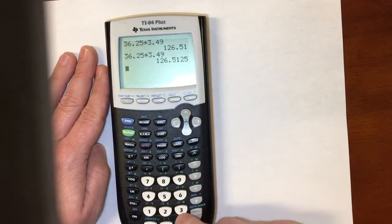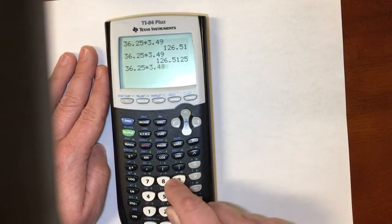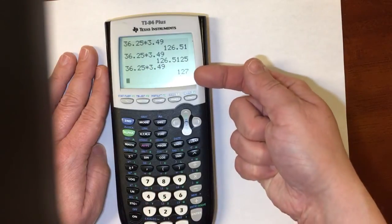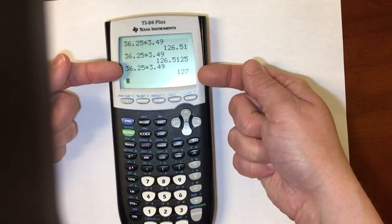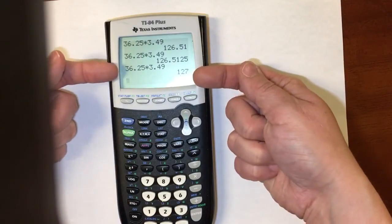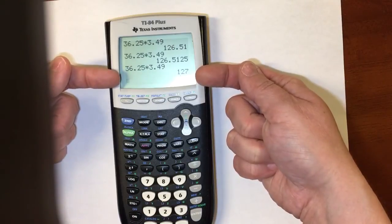Second and quit to get out of there. So 36.25 times 3.49. It's going to make it be a whole number. That doesn't mean this is a whole number when I multiply this together. It just means that I've asked the calculator to round for me.